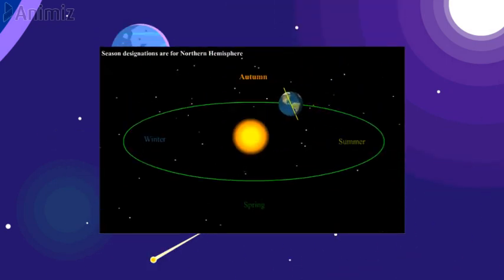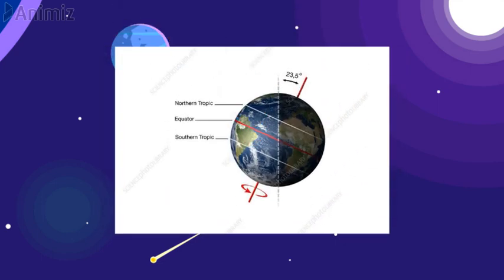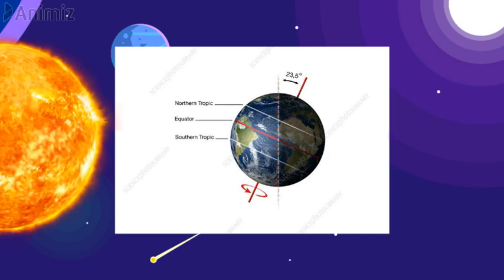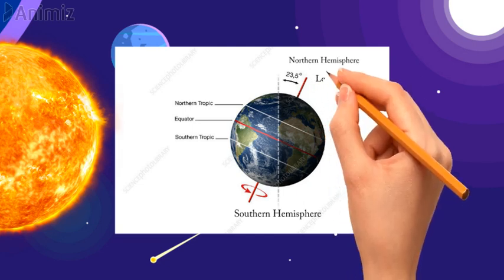The earth travels around the sun changing its position in different months of a year. Let's see at this position of the earth. If we divide the earth into two equal halves, we can see that the sunlight is falling majorly on the lower part of the earth, that is in the southern hemisphere.